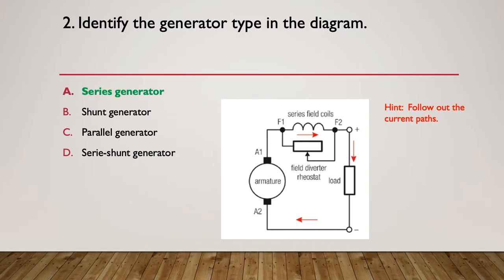This is a series generator. So this resistor here was just the load, so we can kind of just ignore him for now. And here's our supply through the field, through the armature, and back out on the terminals. It's a series generator because the field coils are in series with the armature.